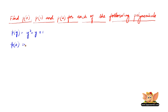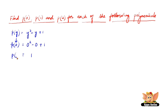p of 0 will be 0 squared minus 0 plus 1. All I am doing here is writing 0 in the place of y in the expression. So we get 0 squared minus 0 is 0, and 0 plus 1 is 1. Therefore, p of 0 is 1.